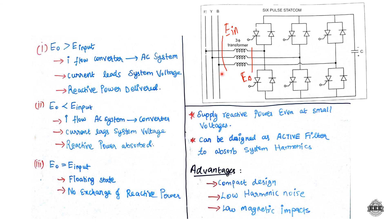Case 3: When E0 equals Einput, the voltage is the same and there's no reactive power transfer. This is called the floating state.